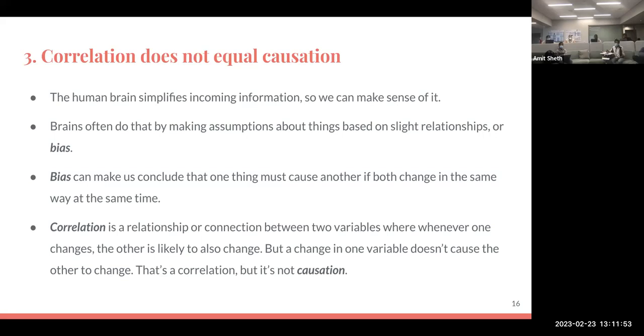The third main point that this book talks about is the very famous phrase: correlation does not equal causation. As I mentioned last time, a human brain is very active in making relationships and seeing patterns where there are none. Human brain simplifies incoming information so we can make sense of what we hear and see. The brain often does this by seeing slight relationships or making bias. This bias makes us think that one thing may cause another if both change in the same way at the same time.